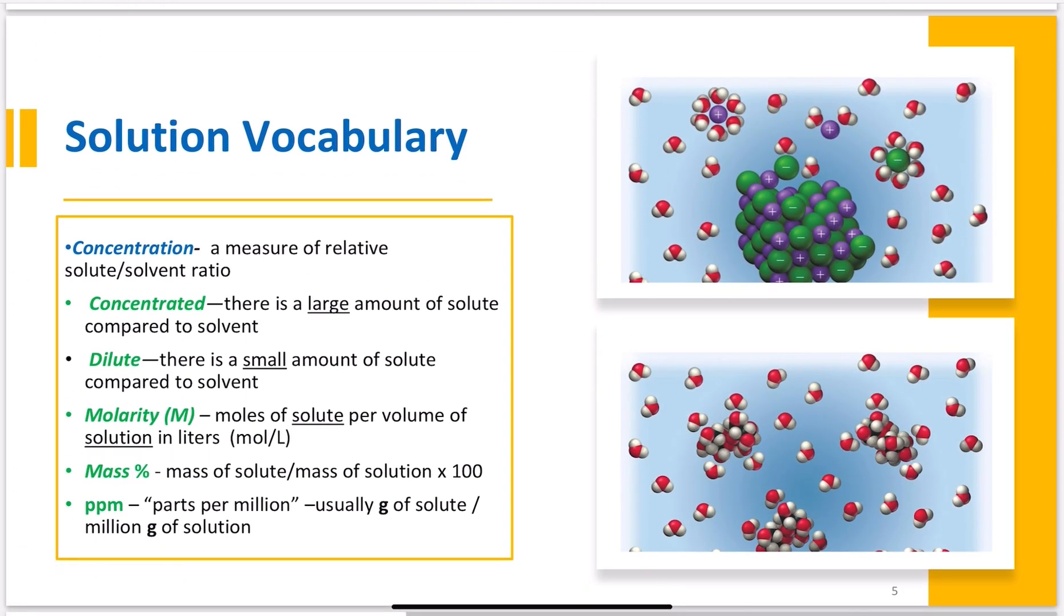In Gen Chem world, water is often our solvent. So, a little more vocabulary. First, concentration. Concentration is a relative term - it's a measure of how much solute I have to my solvent, what ratio I have. We have the terms concentrated and dilute, but these are relative to one another. Concentrated means there's a large amount of solute compared to the solvent, and dilute means there's a small amount of solute compared to the solvent.